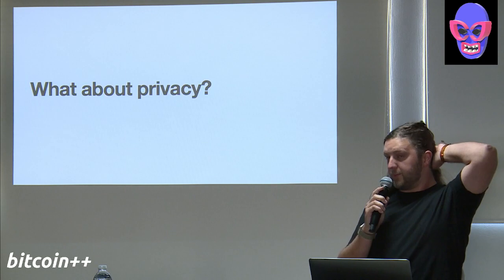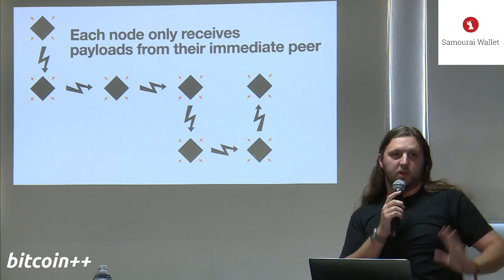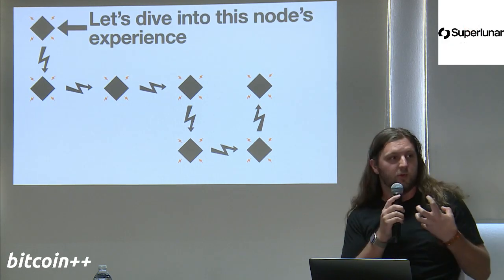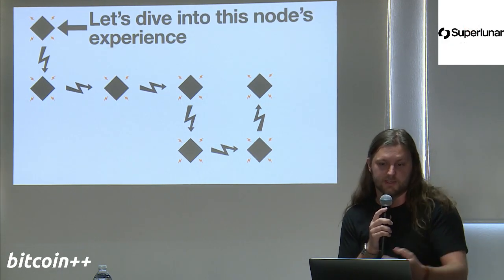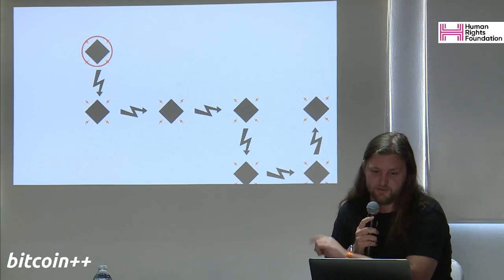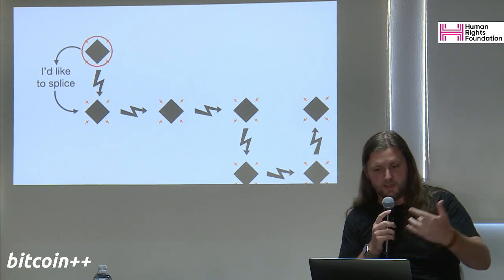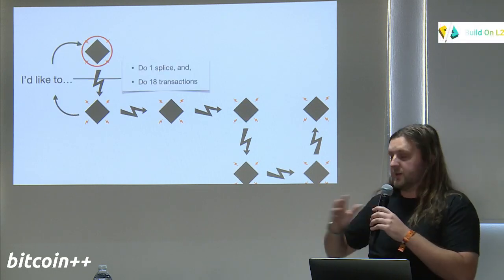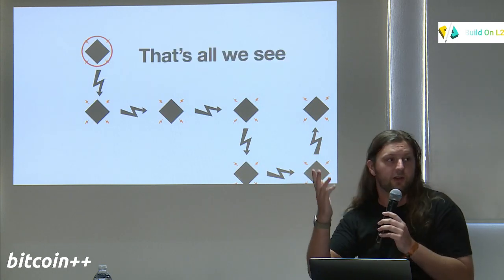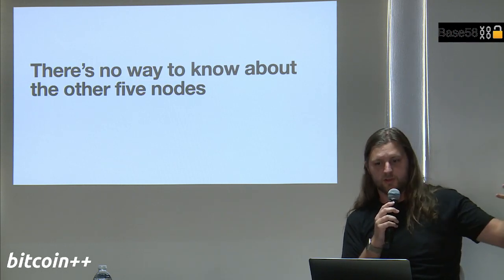What about privacy? How does this work from a privacy perspective — who knows what's happening in this whole setup? Let's dive into the first peer. He started everything by saying he'd like to make a splice and talking to that node. What he got back was a request — the peer wants to do a splice with 18 transactions. And that's all he sees — that's all that node knows. There's no way for it to know about the other five nodes further down the path.